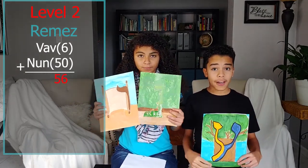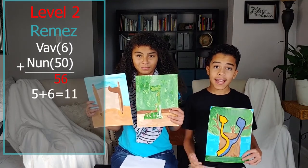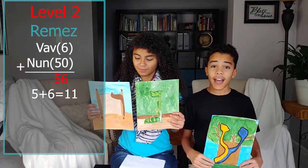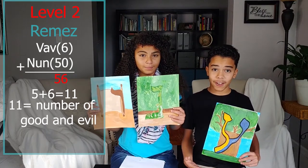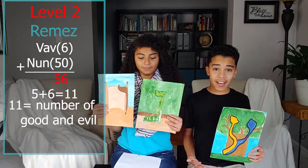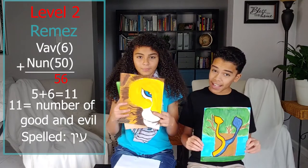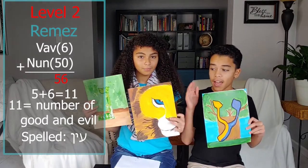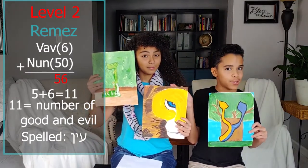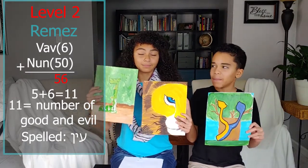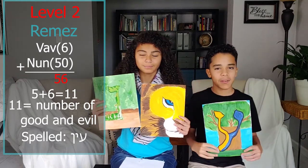If you add 5 plus 6, you get 11. 11 is the number of good and evil. This letter is spelled with an ayin, a yod, and a nun sofit. But this is a nun, and it would suffice.